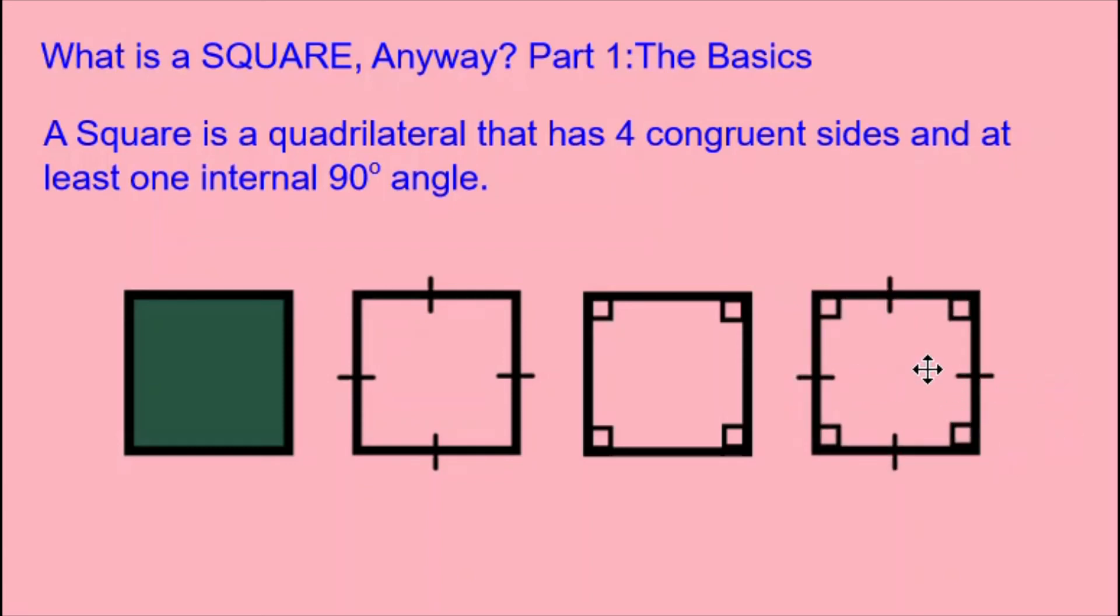So I can draw my square like this, where we see the four little squares in the corners that signify that those are 90-degree angles, and we see the little lines that show that the four sides are congruent. These are some of the basic facts about the square.